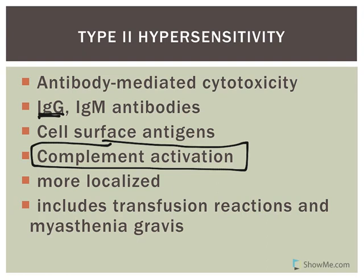This type tends to be a little more localized. Examples include transfusion reactions. Myasthenia gravis is an autoimmune disease whose damage is an example of Type 2 hypersensitivity. With myasthenia gravis, there is loss of nicotinic receptors found on skeletal muscles, leading to muscle weakness and fatigue.